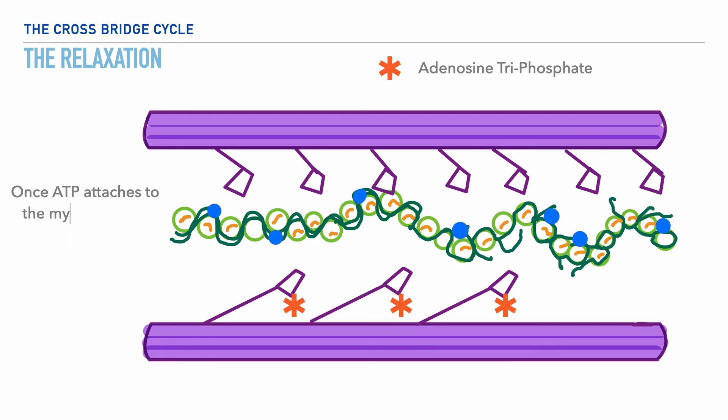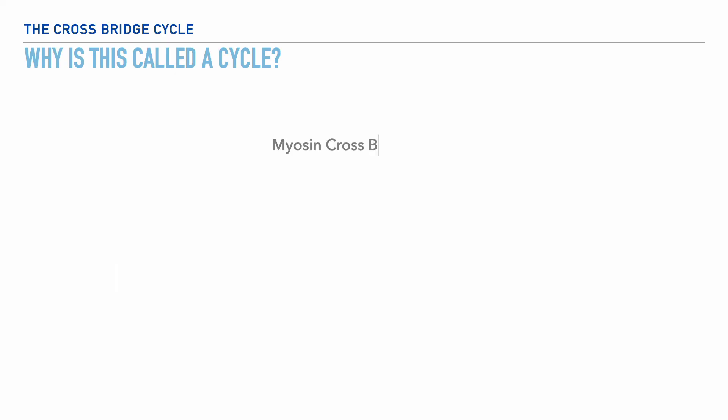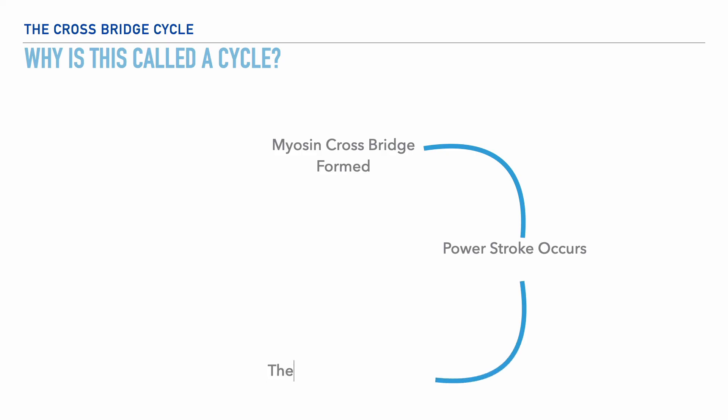The myosin heads return to a resting position once ATP or adenosine triphosphate attaches to them. This is called the cross-bridge cycle because we'll have a continuation of this process — hence the term cycle — as long as energy in the form of ATP and calcium are readily available in the body. Here's the cycle in notation form: a myosin cross bridge is formed; the power stroke occurs, which leads to the shortening of the sarcomere; the release of energy in the form of ADP and phosphate; followed by the attachment of ATP to the myosin head to relax the cross bridge.